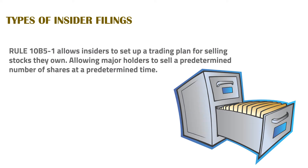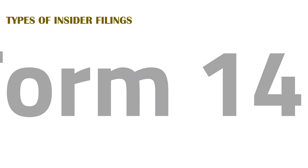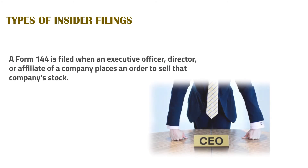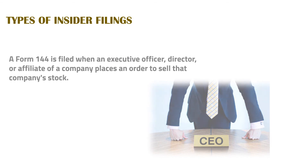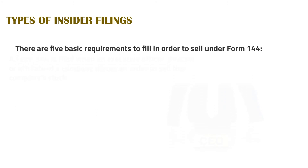The last major insider filing you should be aware of is the Form 144. A Form 144 is filed when an executive officer, director, or affiliate of a company places an order to sell that company's stock. There are five basic requirements to fulfill in order to sell under a Form 144. Here they are.